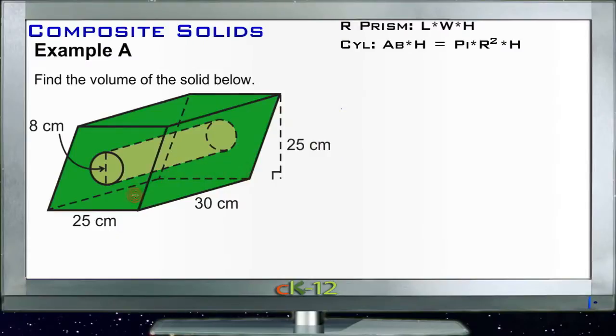So in this case we have a rectangular prism and then we have a cylinder. The cylinder is sort of a hole drilled out of the center of this rectangular prism, this sort of long box. So what we need to do is find the volume of both the box and the cylinder and then we'll subtract the volume of the cylinder from the volume of the box.